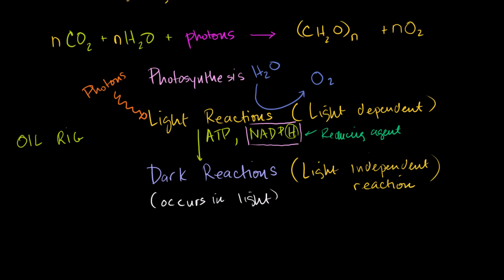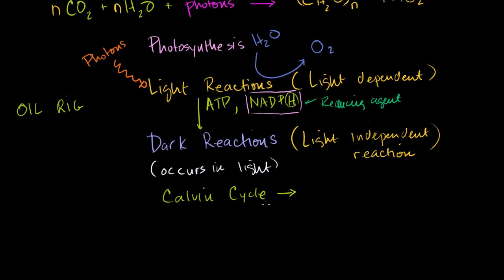And the dark reactions, for most plants we talk about, it's called the Calvin cycle. And I'll go into a lot more detail of what actually occurs in the Calvin cycle. But it takes in the ATP, the NADPH, and it produces, it doesn't directly produce glucose. It produces, well you probably saw this, you could call it PGAL, you could call it G3P. These all stand for, let me write these down, this is phosphoglyceraldehyde.